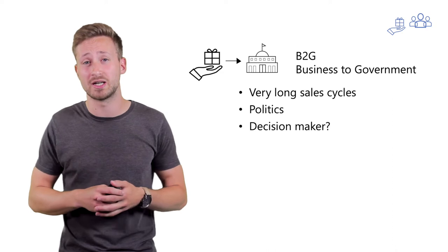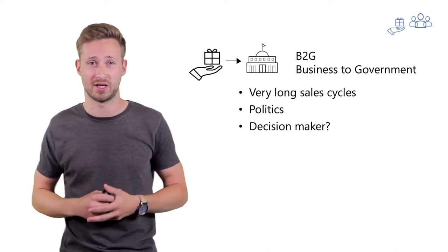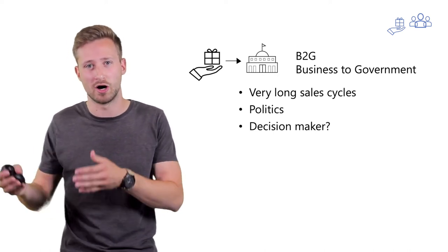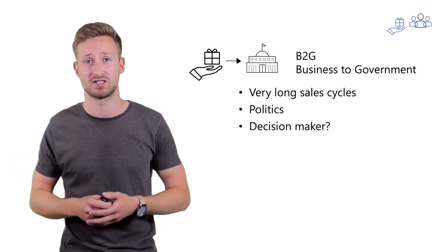Besides, responsibilities can be swapped around quite easily, and that can set you back a few steps. Don't forget all the people you meet during your sales process selling to a government could have an influence on a different stage within the sales process. So you'll need to do some lobbying.